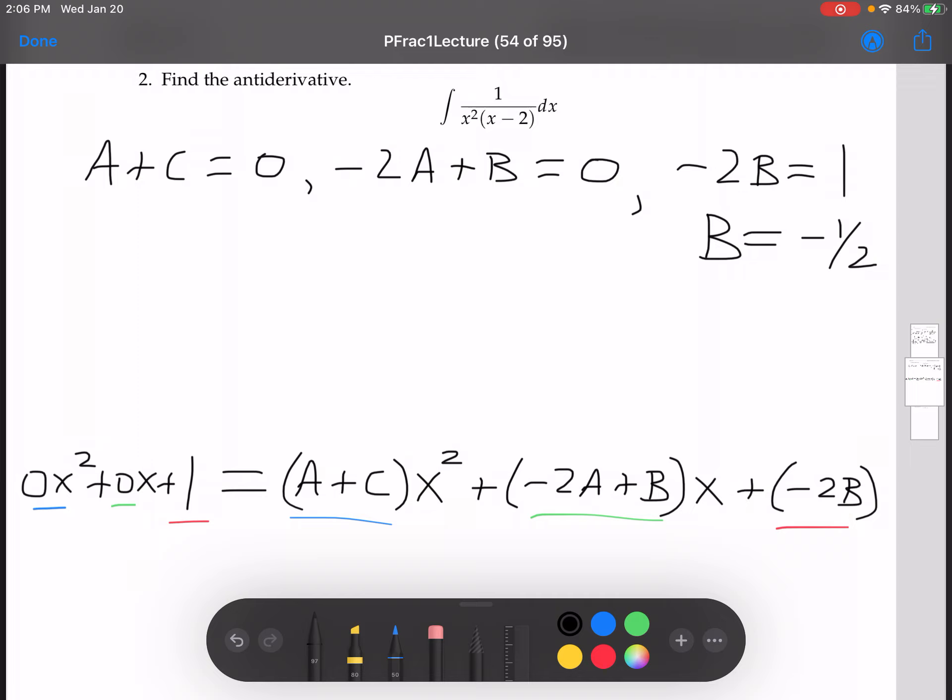Negative 2B equals 1, that tells us that B equals negative 1 half. All right, so we've got B now. If B is negative 1 half, then we can say negative 2A minus 1 half equals 0, so negative 2A equals 1 half. Dividing both sides by negative 2, we see that A is equal to negative 1 fourth.